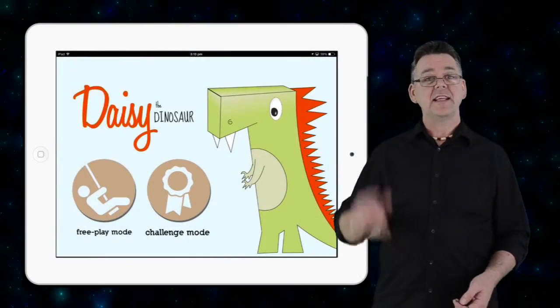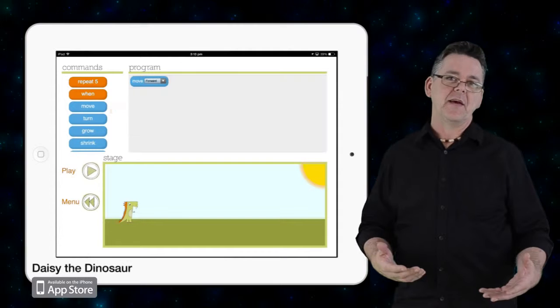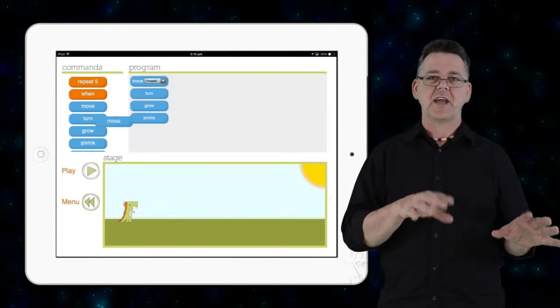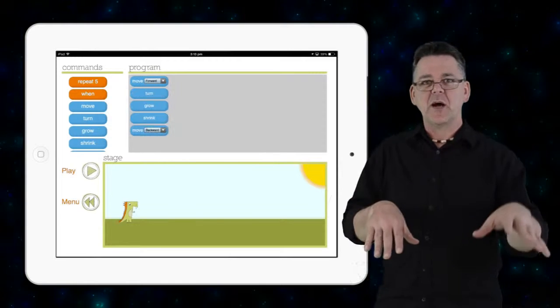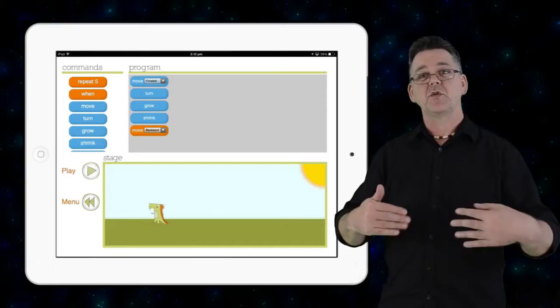Similar to this idea is Daisy the Dinosaur. It's a simple programmable game that challenges students to sequence the movements of a cartoon dinosaur character to step and jump and spin, turning the sequence of algorithms into a game.